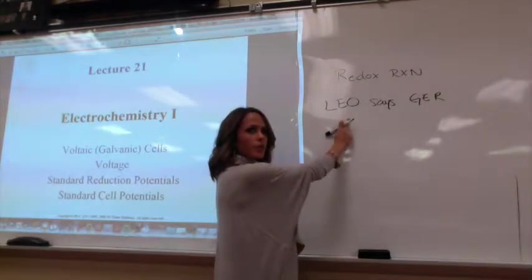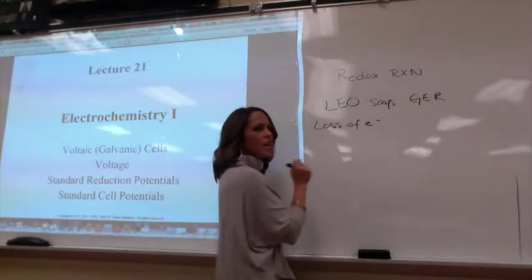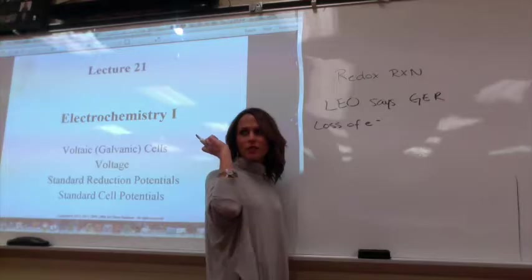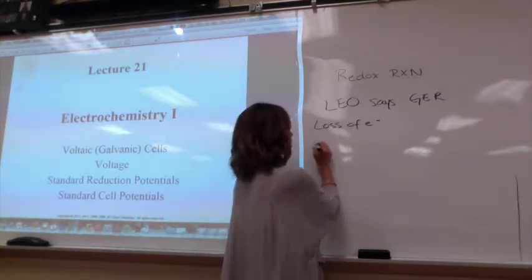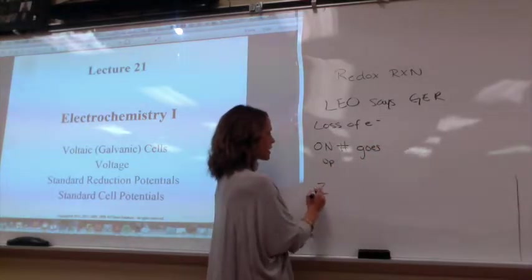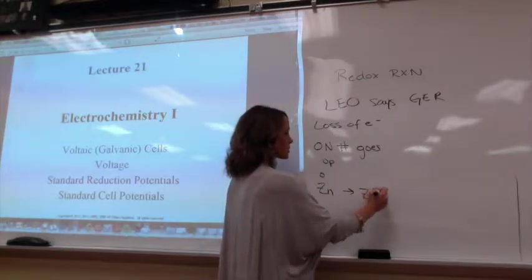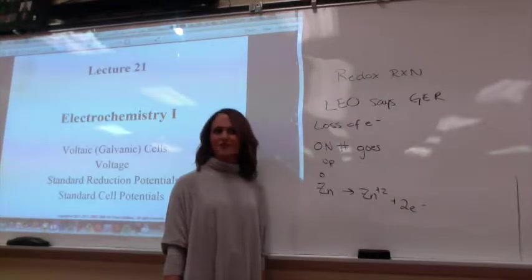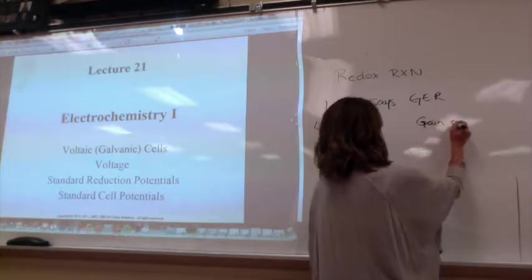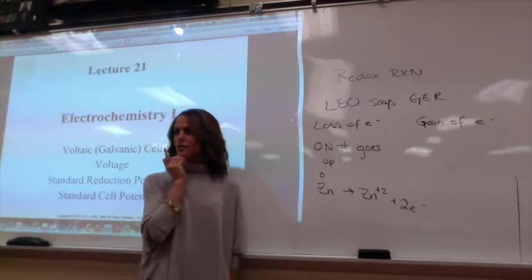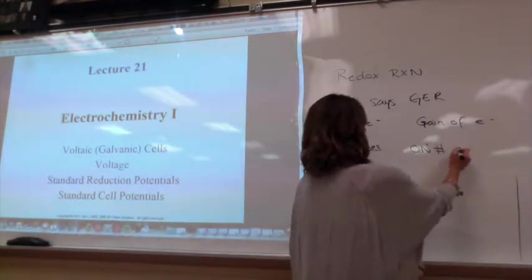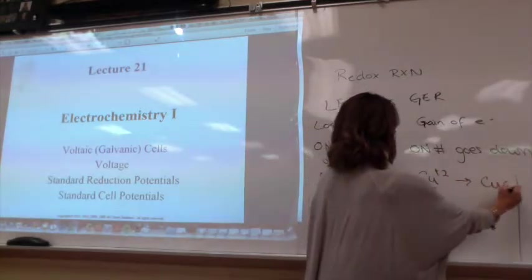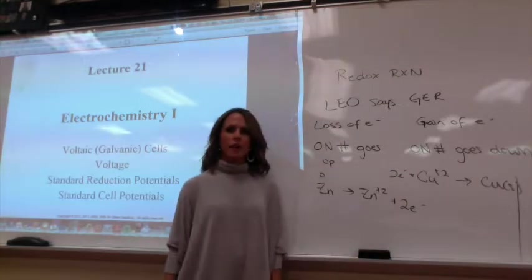You need to recall for a redox reaction how you end up with electrons flowing — that's through LEO says GER. LEO is the loss of electrons, and that means your oxidation number goes up. Going down would be a reduction — reducing means the number goes down. Oxidation means your oxidation number goes up. For example, Zn with a zero oxidation number going to Zn²⁺, losing two electrons. For GER, gain of electrons, your oxidation number goes down — Cu²⁺ goes to Cu solid, gaining two electrons, oxidation number goes from +2 to zero.